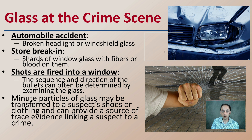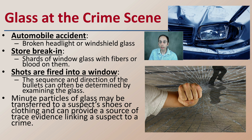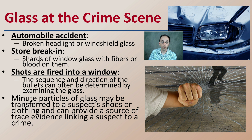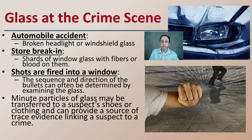In the actual crime scene where glass may be used: automobile accidents where a broken headlight or even windshield glass could be fractured or damaged; a store break-in, where shards of window glass with fibers or blood on them can also help link a person to a scene; shots fired into a window, where the sequence and direction of the bullets can often be determined by examining the glass. These small, minute particles of glass may be transferred to a subject's shoes or clothing and can provide a source of trace evidence linking the suspect to the actual crime scene.